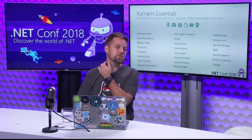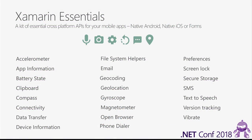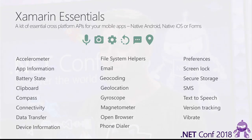First in the next things: Xamarin Essentials. As James and Miguel mentioned earlier, it's the cross-platform API. Think of Xamarin Forms as your cross-platform UI, whereas Xamarin Essentials is your cross-platform API — accelerometer, battery state, clipboard, connectivity, permissions, and much more. It's in preview now and we'll be going stable very soon. The API is clean, smooth, and super easy to use. Highly recommended.